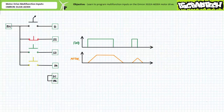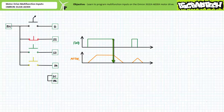A timing diagram of the forward function would look like this. When the input executing the forward function is energized, the motor drive initiates the acceleration ramp up. If the input remains asserted, the motor drive will continue to operate at constant speed mode. When the input executing the forward function is de-energized, the motor drive initiates a deceleration ramp down, at which point it turns off. The motor drive will only reach constant speed mode if the input executing the forward function is energized longer than the acceleration ramp up. When de-energized prior to reaching constant speed, the motor drive initiates an abbreviated deceleration ramp down.